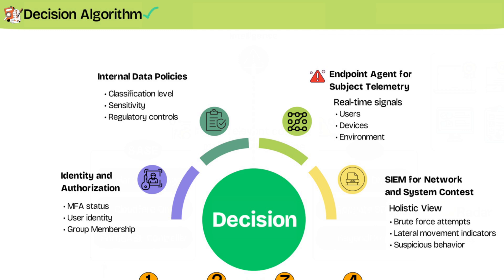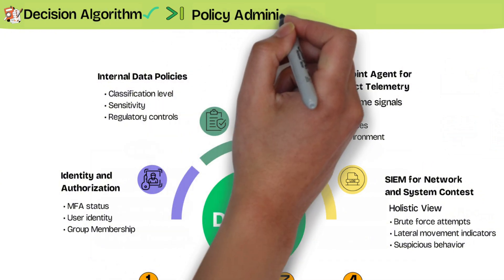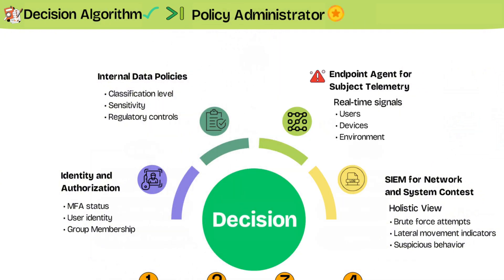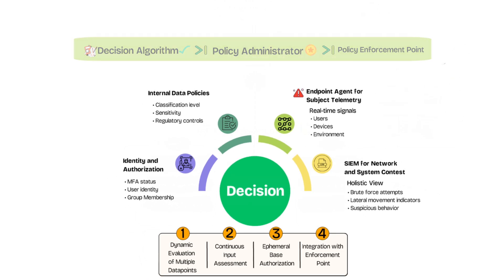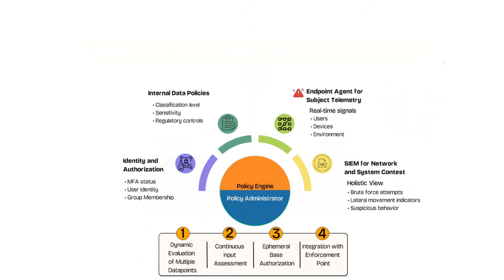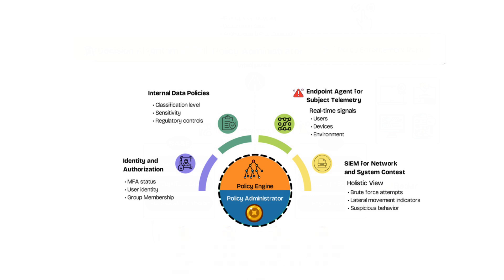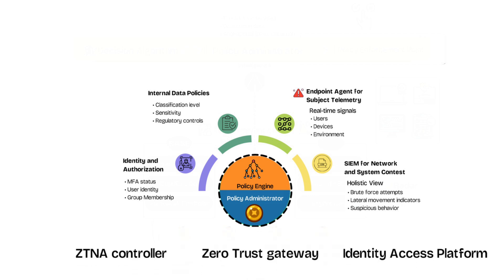All of these internal and external inputs are fed into the decision point's algorithm and evaluated against the organization's defined access policies. If the access request meets all the criteria, the decision point renders an approval decision and passes it to the policy administrator, which provisions session-specific ephemeral credentials and coordinates with the policy enforcement point to grant access. NIST 800-207 describes the policy engine and policy administrator as two separate functions within the decision point — the separation helps define clear roles, where one component makes a decision while the other carries it out. In real-world implementations, these two functions are almost always tightly integrated and often live inside a single platform.